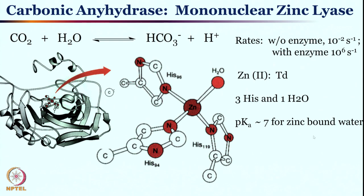Often non-redox metal ions are used, meaning other side reactions remain constant. We will now look at carbonic anhydrase. It is a simple enzyme — a mononuclear zinc enzyme. As you can see in the active site, if you look at the whole protein it is a very complex structure with a lot of protein backbone and residues.